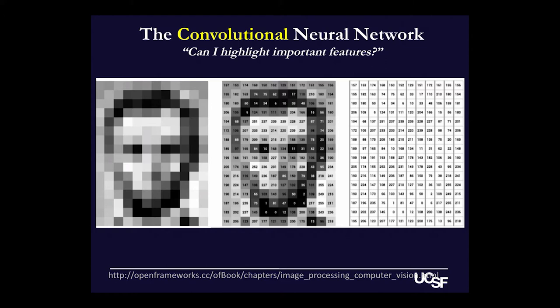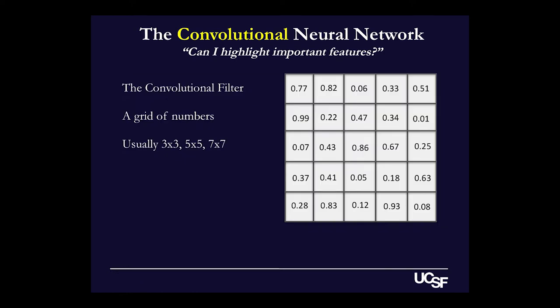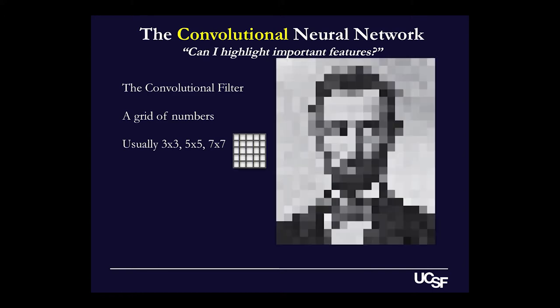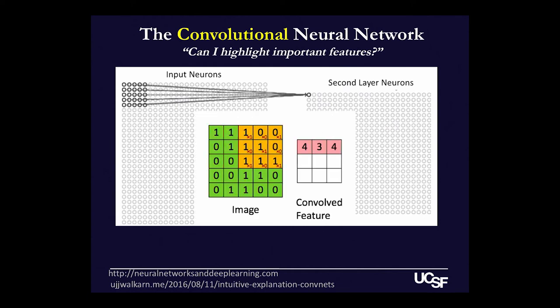How does an algorithm start to pull out features that might be important in identifying what's in a photograph? This is where the convolutional filter comes in. A convolutional filter is just a small grid of numbers, something like five by five or seven by seven. The numbers in that grid are used to process the pixel values at many positions throughout the image using multiplication and addition. The filter is about postage-stamp size relative to most images, and it is convolved over the image — moved or slid like a window across all the positions that it fits. The computer does its multiplication and addition and generates a single number based on that grid at each position.